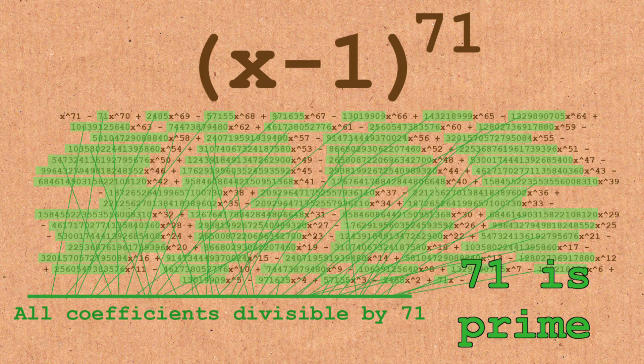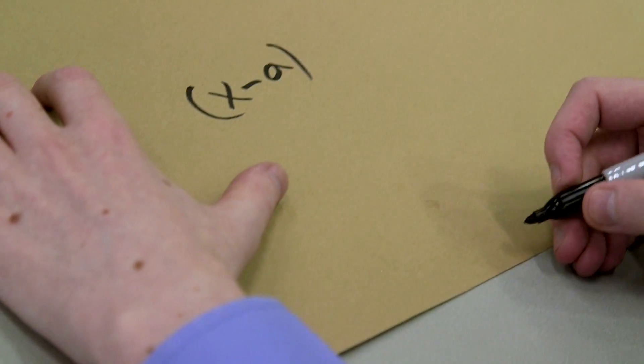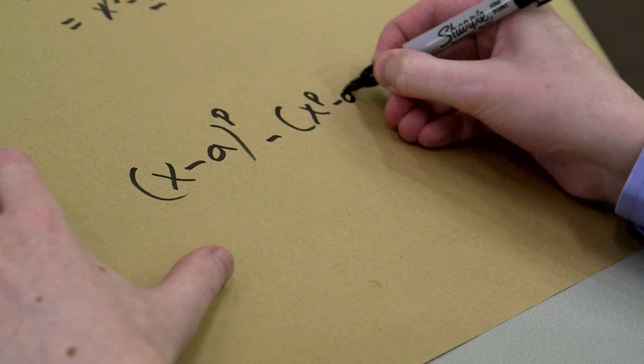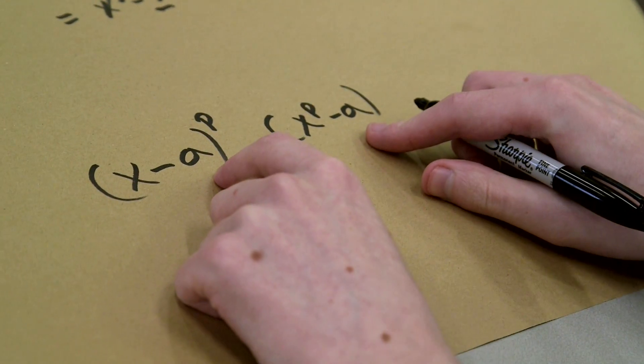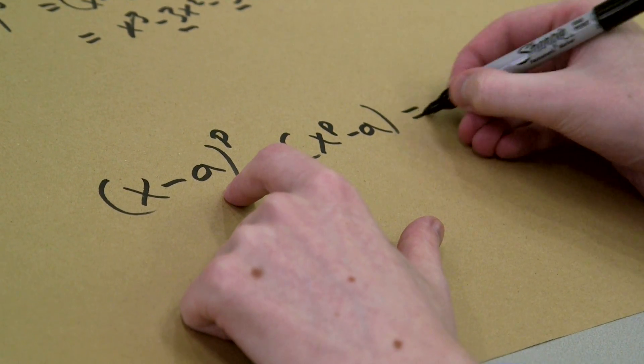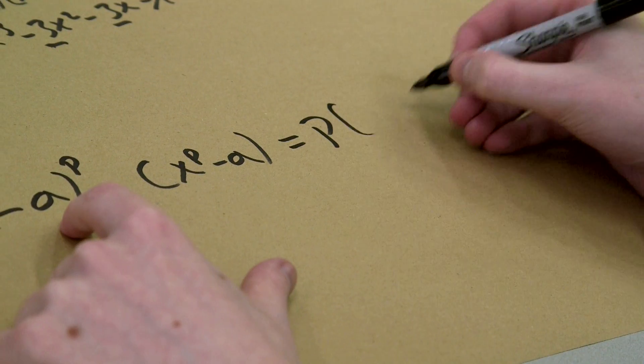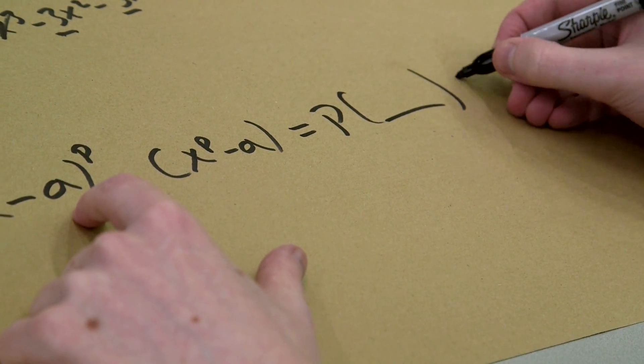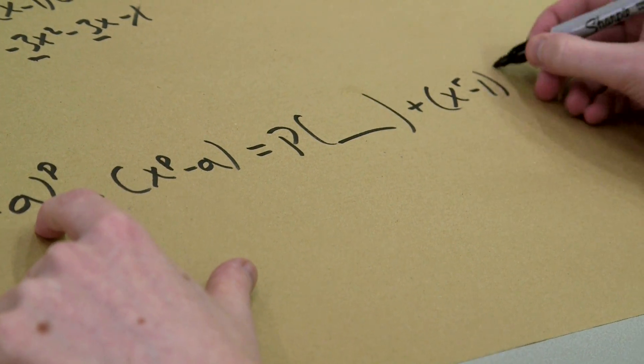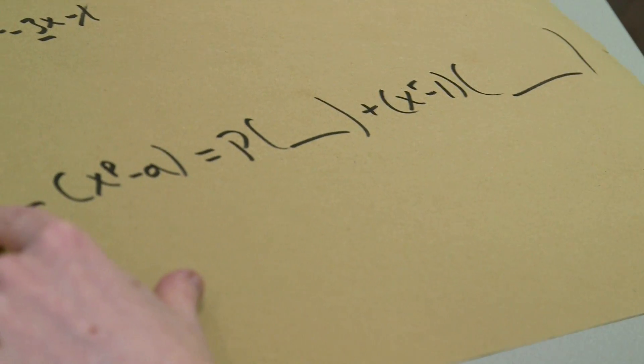So just to make it a little bit faster, what they did is x minus a to the power of p minus x to the p minus a. So a is a number like we had before. And they said this was equal to p lots of something plus, here you go, x minus r minus 1 multiplied by something.